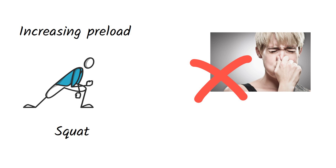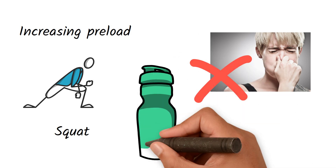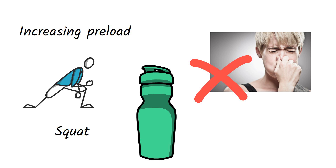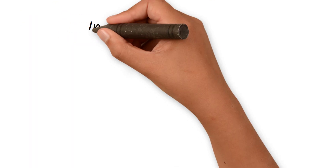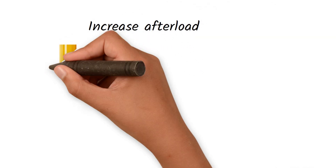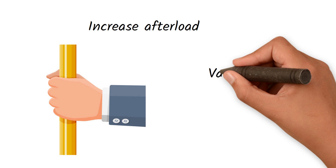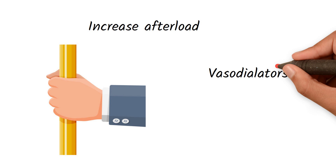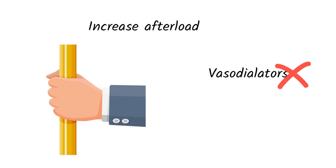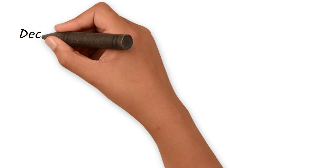To keep preload increased, we must ensure patients are not dehydrated. To increase afterload, hand grips increase systemic vascular resistance. Vasodilators like ACE inhibitors and ARBs reduce the afterload and should be avoided in hypertrophic cardiomyopathy. We also have to decrease contractility of the heart, because high contractility further obstructs the left ventricular outflow tract. We use calcium channel blockers and beta blockers for this; drugs like digoxin should be avoided.